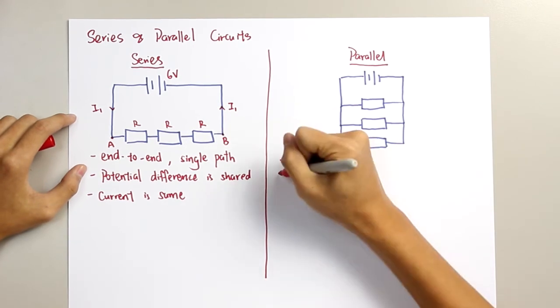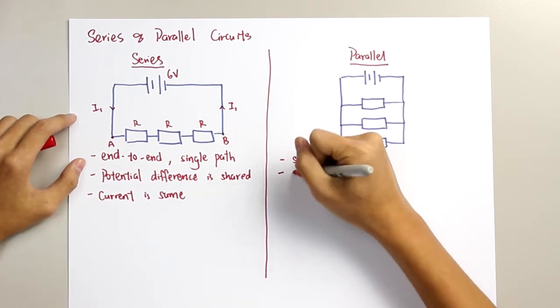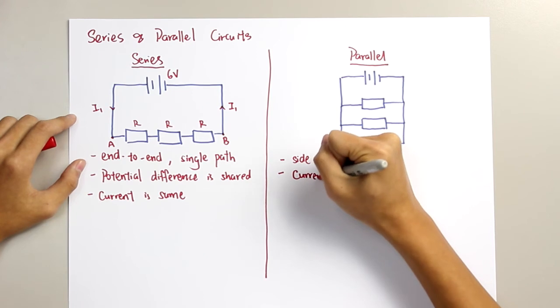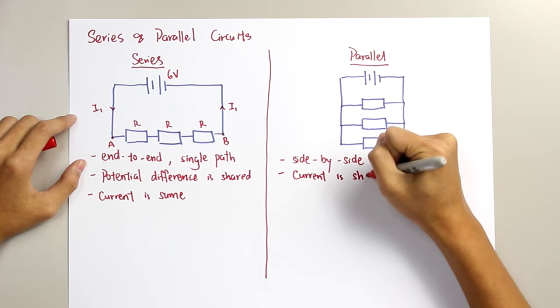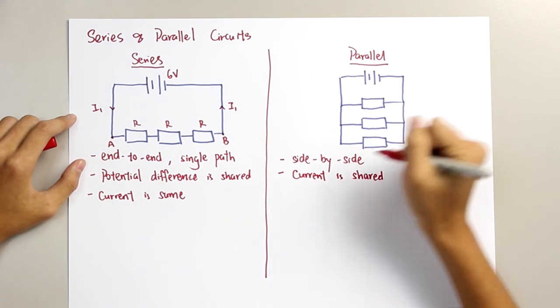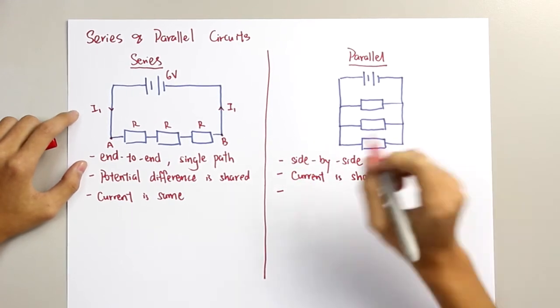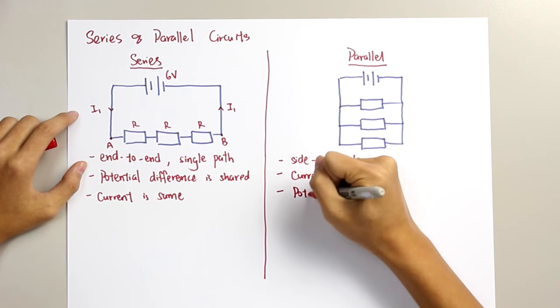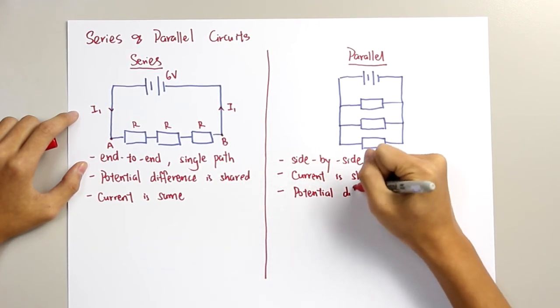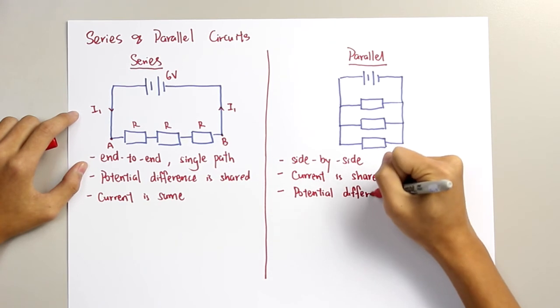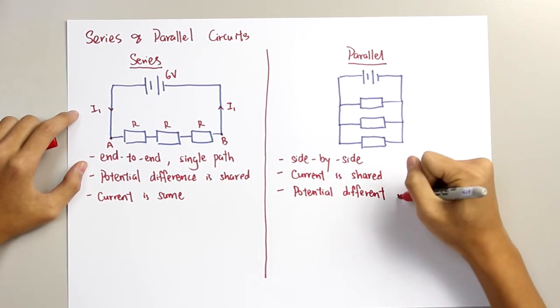Now, we move to the parallel. The current in parallel circuit is shared, whereas the potential difference is the same.